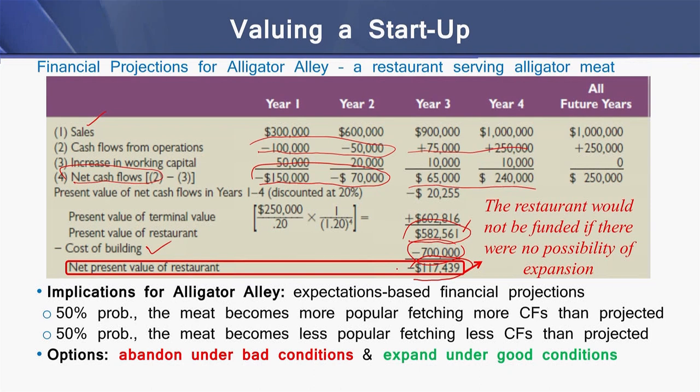The implications for this project are that the projections are based on expectations: there is a 50% chance that the meat will become popular in the region, fetching more cash flows than projected, and an equal 50% chance that the meat will become less popular, fetching less cash flows than projected.